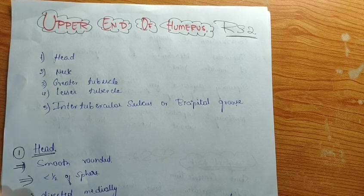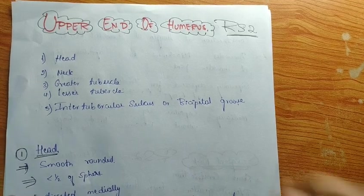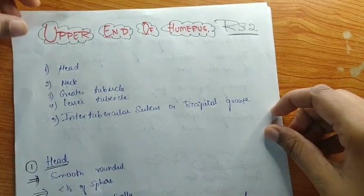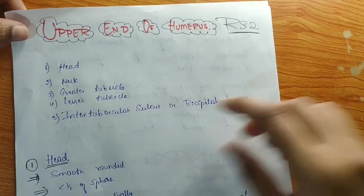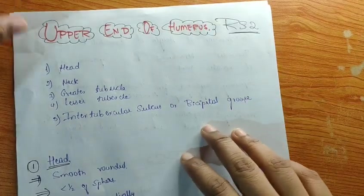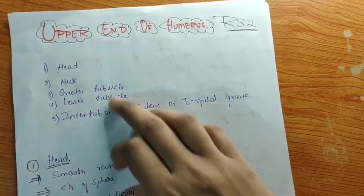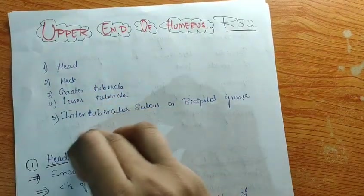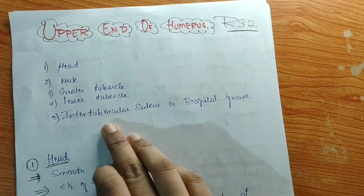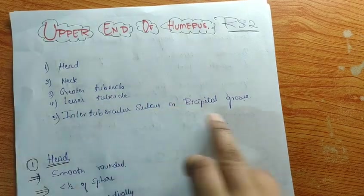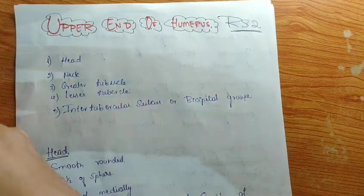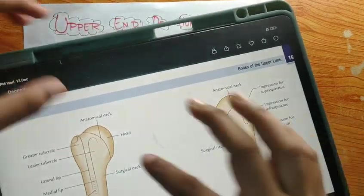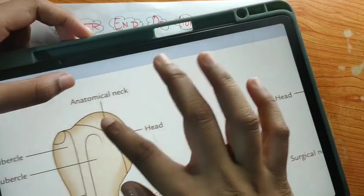Hi guys, this is Preeti and you're watching my day solution. In this video, I'll be teaching you the upper end of the humerus, which consists of the head, neck, greater tubercle, lesser tubercle, and in between those two, the intertubercular sulcus or bicipital groove. As you can see in this image, this is the head.